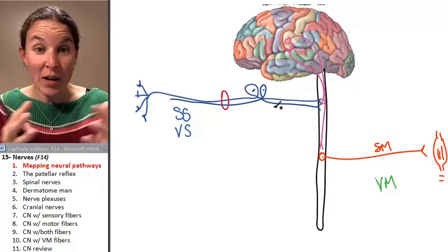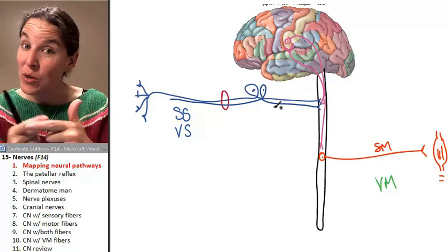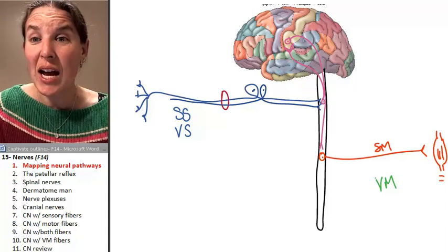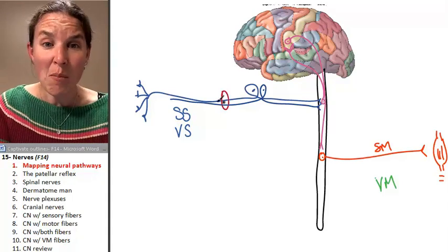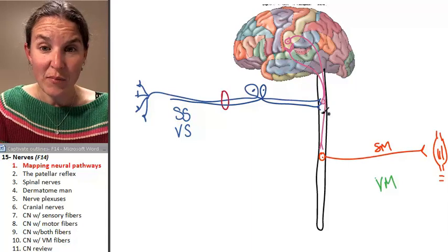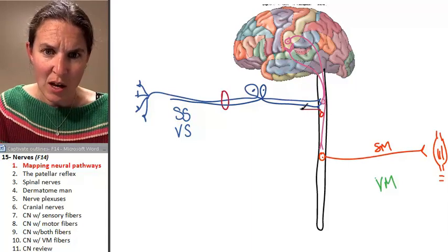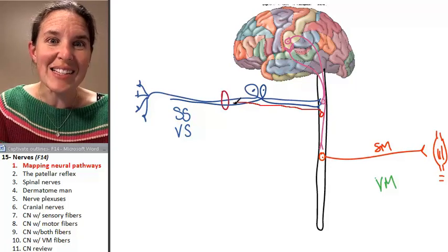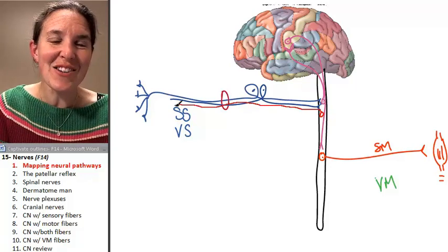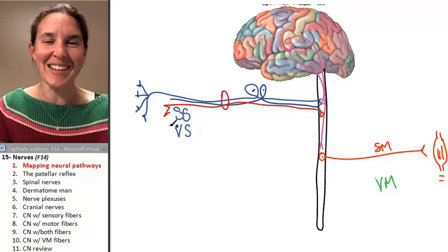Information in one of these pathways can travel both directions, which means we could actually have a motor neuron send information out through that same nerve pathway. What? True story.